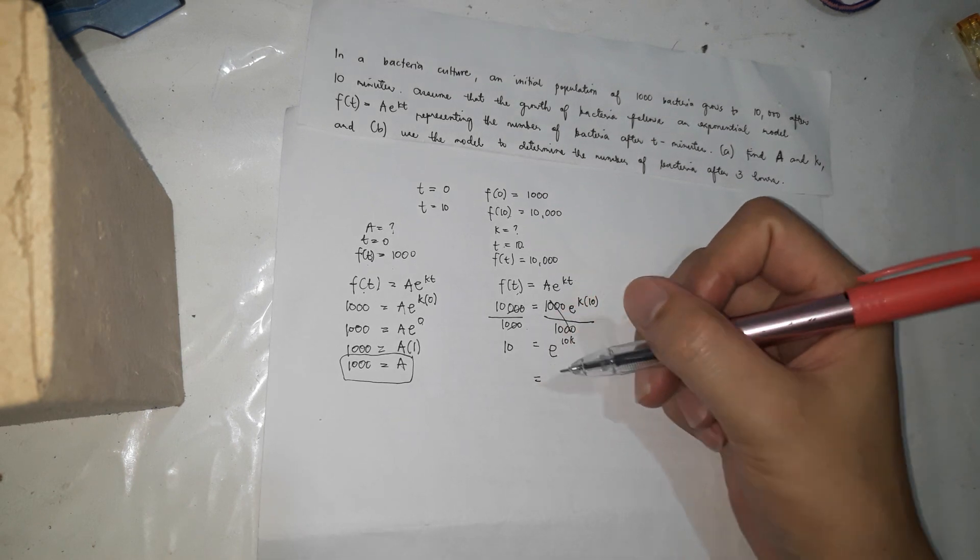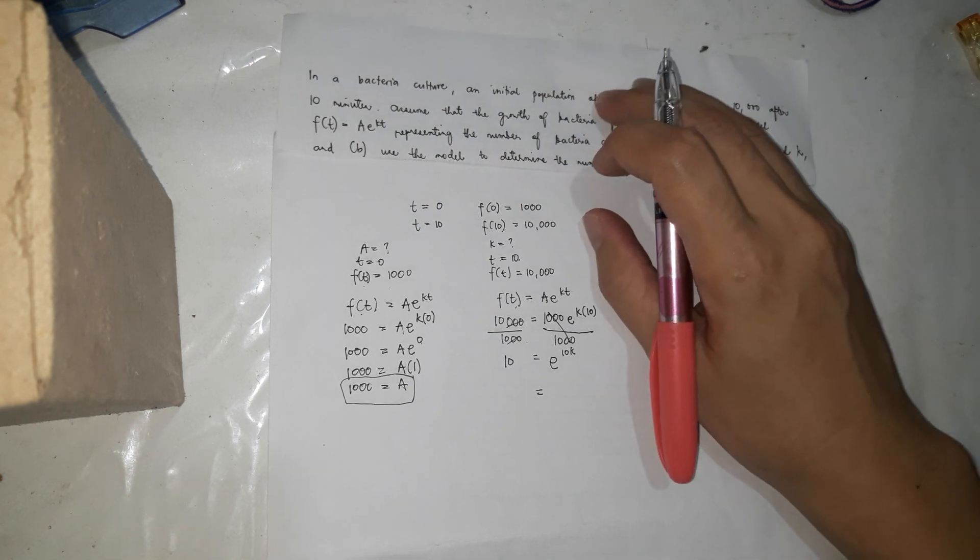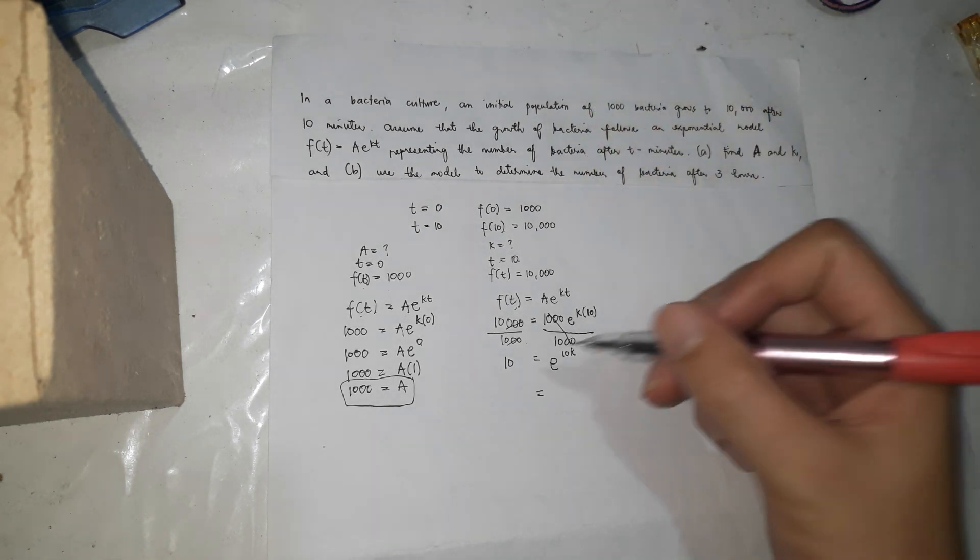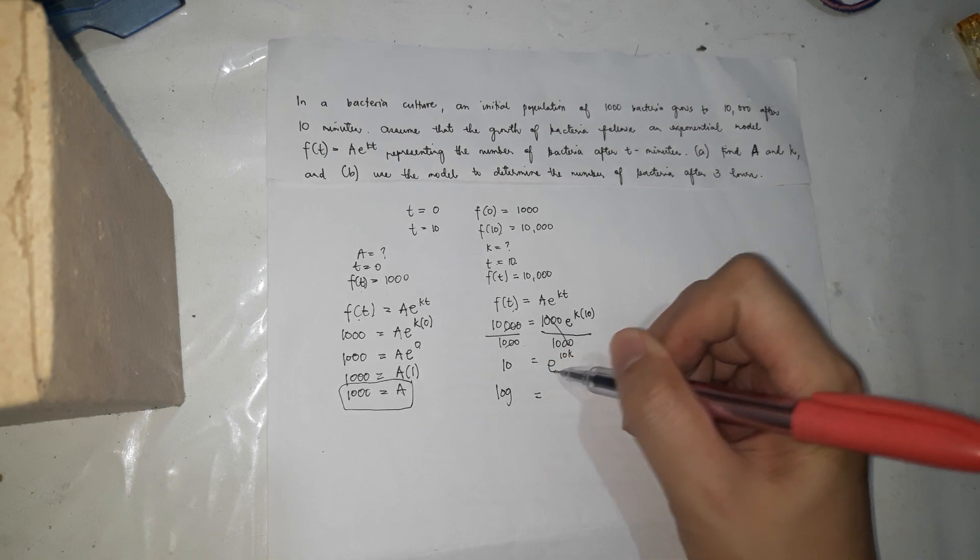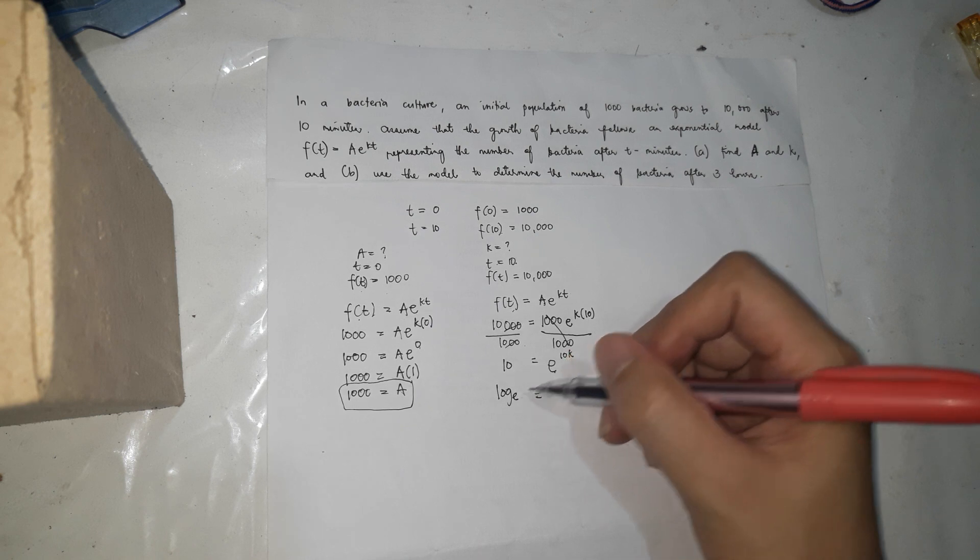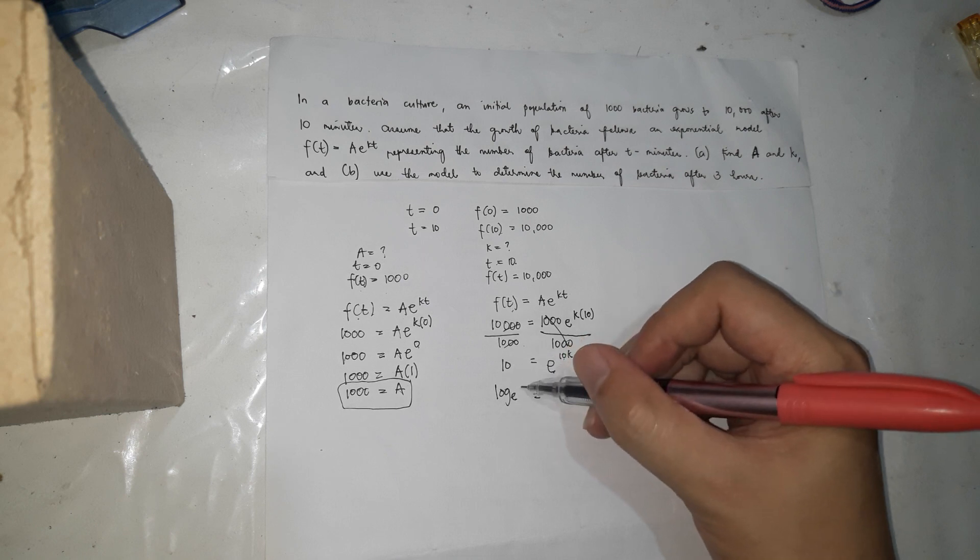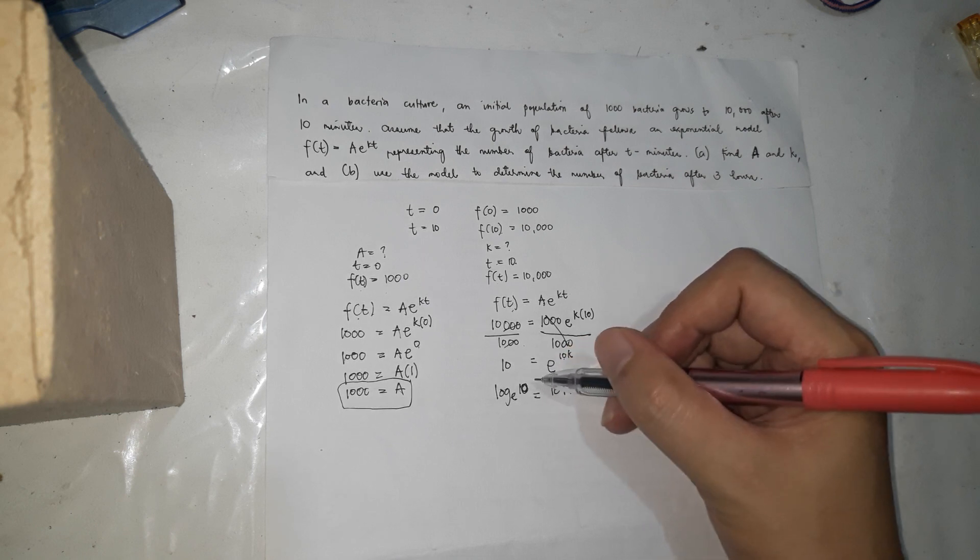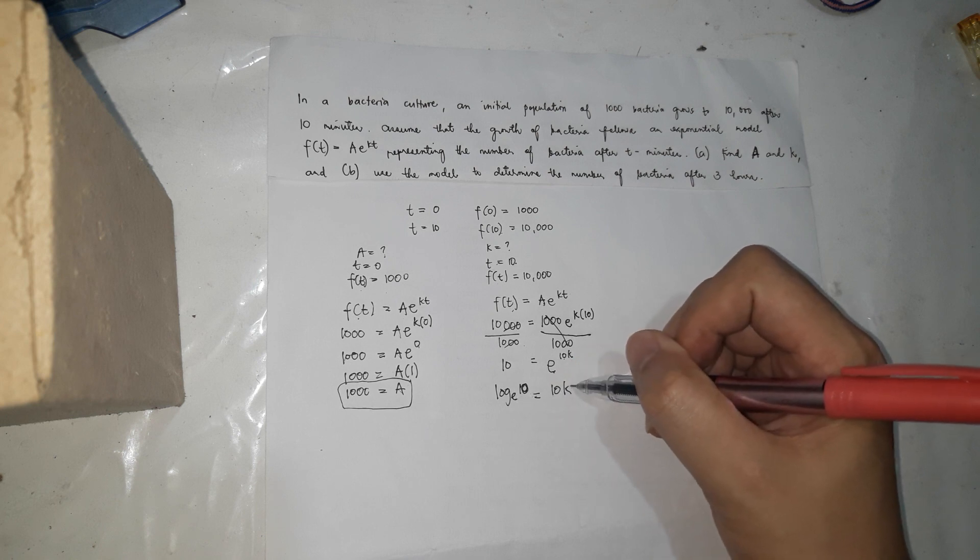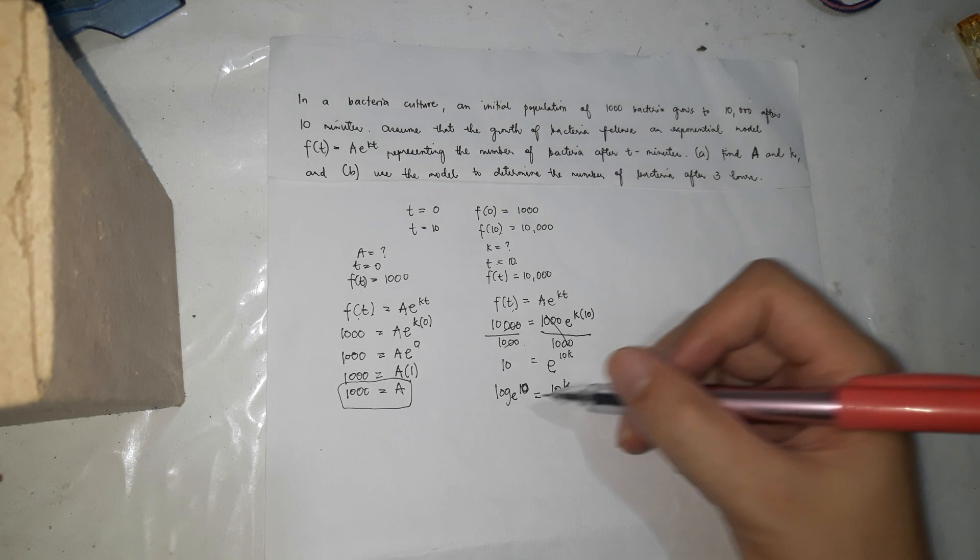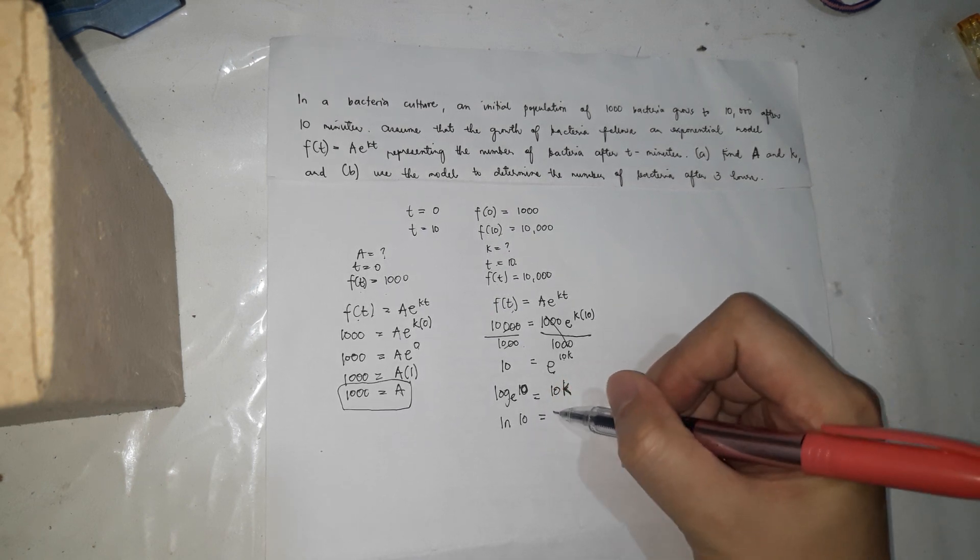From exponential, we'll make it a logarithmic function. So how do you make it a logarithmic function? So log, this base will become the base of the log. This exponent will be the answer. Then this is what you put here. So log of 10 to the base e equals 10k. So log of e is ln of 10 equals 10k.